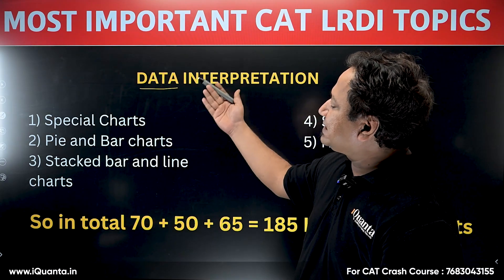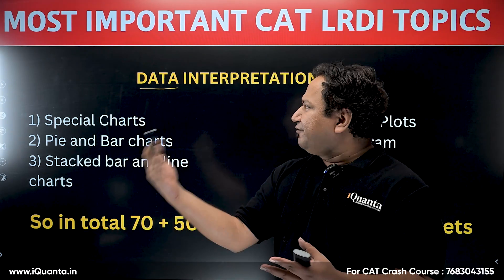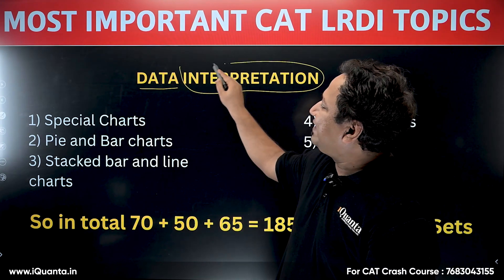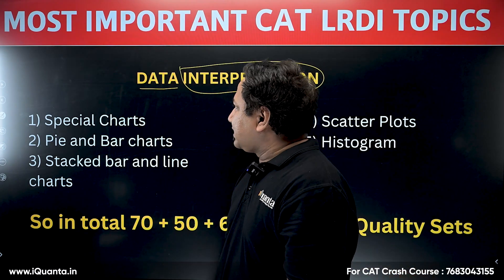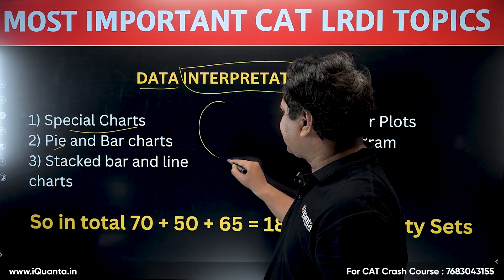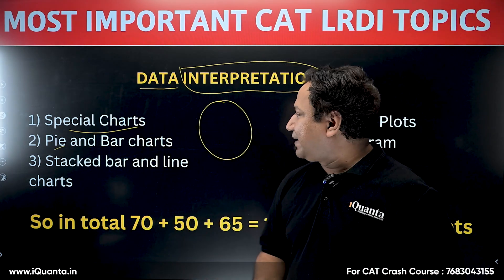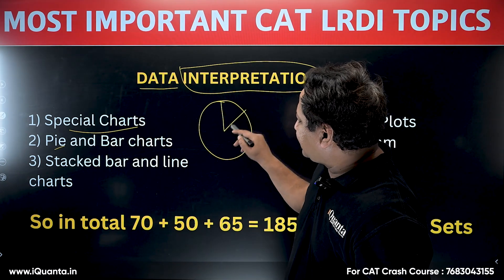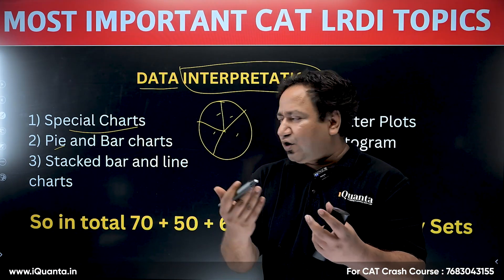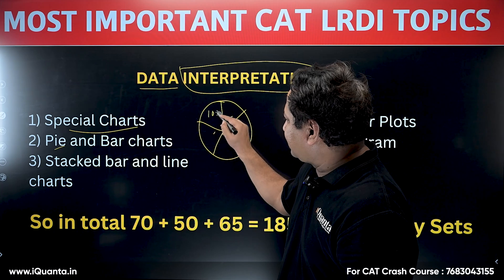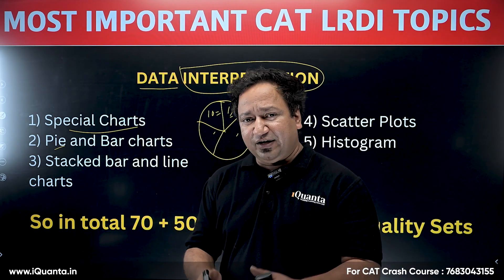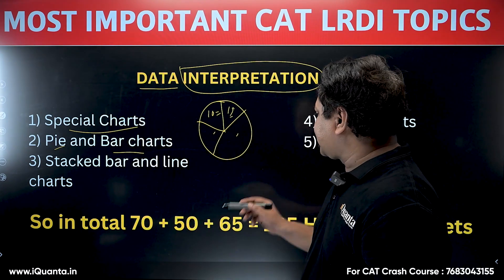Data Interpretation involves taking raw, meaningless data — numbers, names, variables — and interpreting it to derive meaningful information. Data is represented in various special chart types. A pie chart is circular with 360 degrees divided into sectors. For example, four companies producing raw materials might have sectors representing 10 million and 15 million units respectively, and you must decipher meaningful information from it.